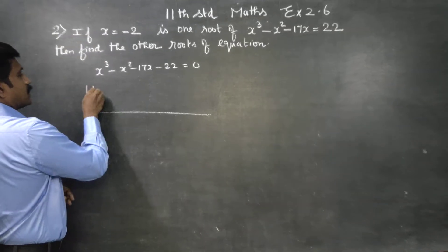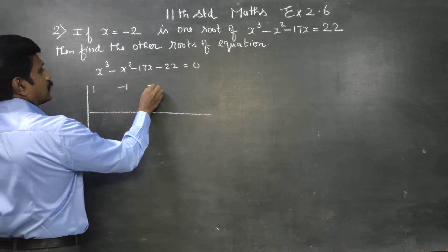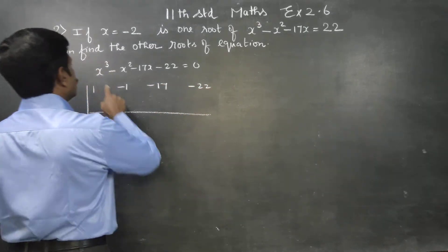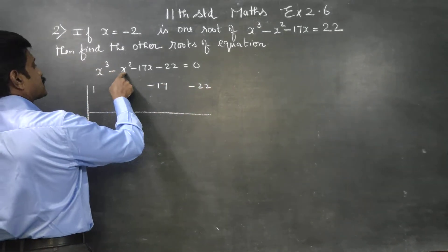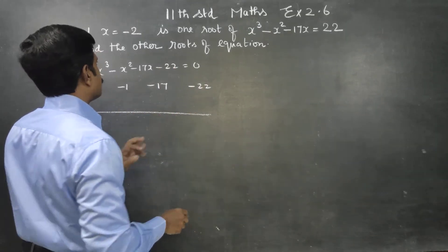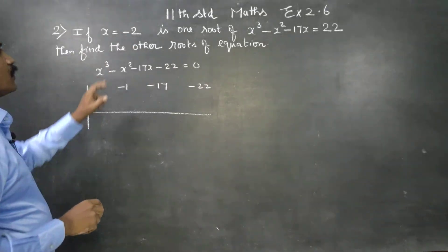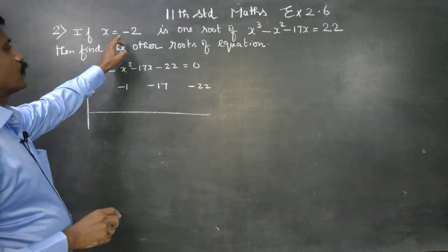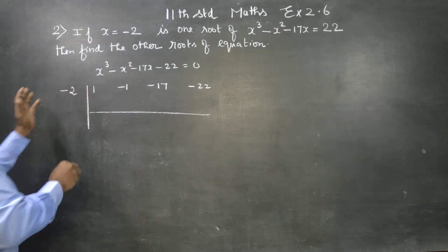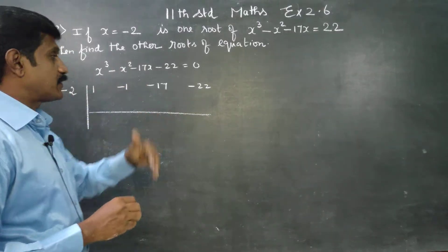The coefficients are 1, minus 1, minus 17, minus 22 — for x cube, x square, x, and constant respectively. We use x is equal to minus 2, and divide using synthetic division to get a quadratic.